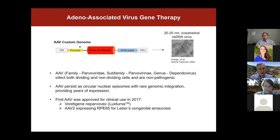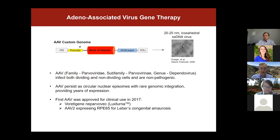Adeno-associated viruses have become particularly powerful in the eye due to their ability to deliver gene products with great therapeutic efficacy. The first AAV approved for clinical use was Luxturna, which expresses RPE65 for Leber's congenital amaurosis. AAVs are small, non-pathogenic viruses that persist long-term in non-dividing cells like retinal ganglion cells and allow delivery of a mini-gene expressing a protein or gene of interest.